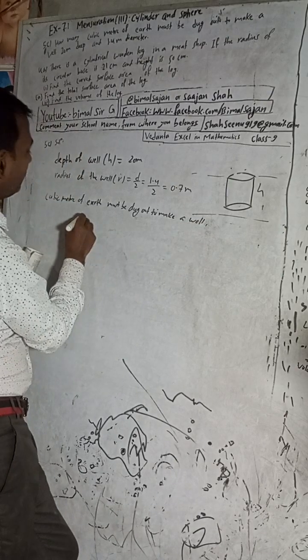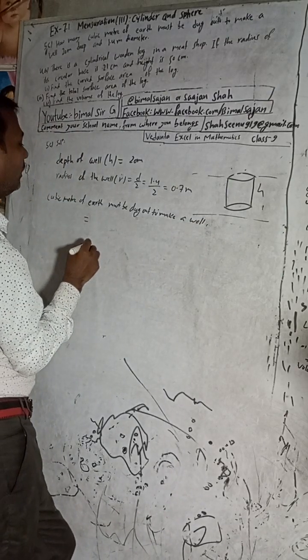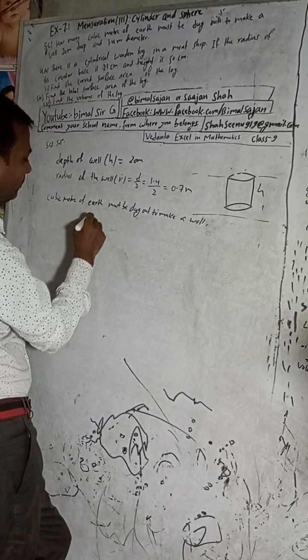Cubic meters - that means volume of the well.